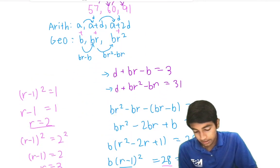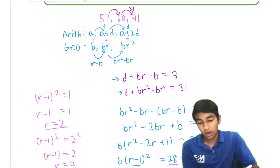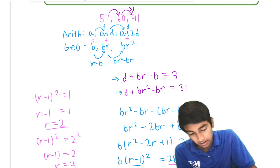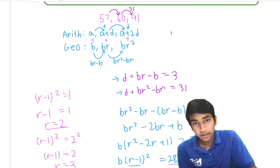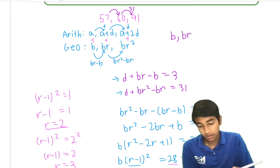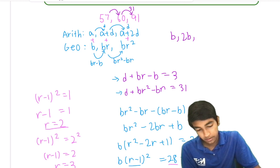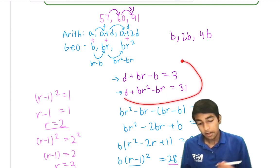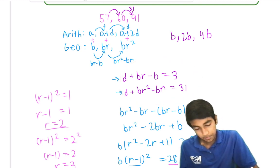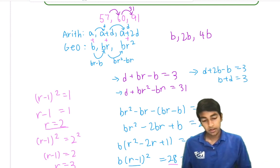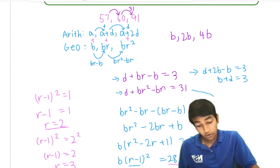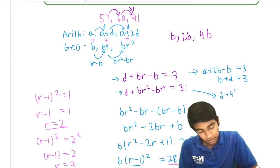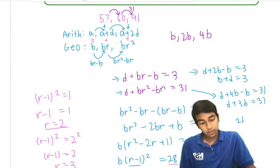Okay, so 57, 60, 91. Let's take the first case. It might be easier just to plug it in here. So if r equals 2, then this equation becomes d plus 2b minus b is 3, or b plus d equals 3. And the second equation becomes d plus 4b minus b equals 31, or d plus 3b is 31.